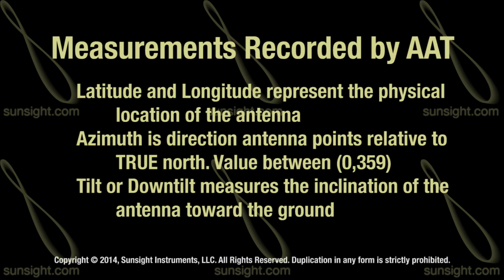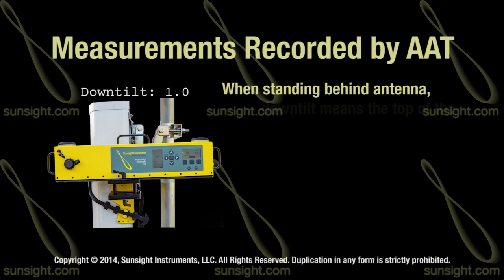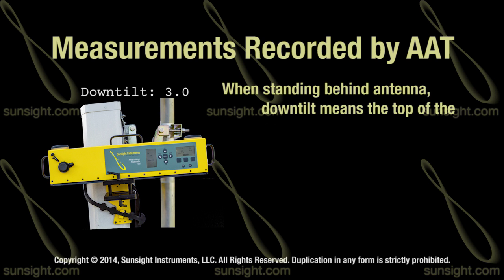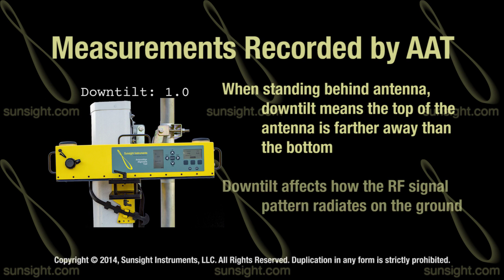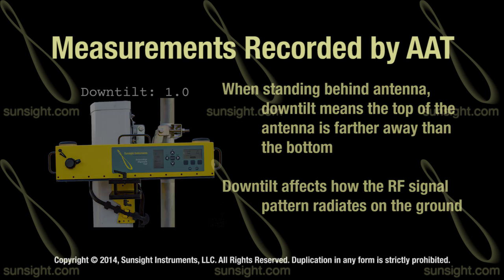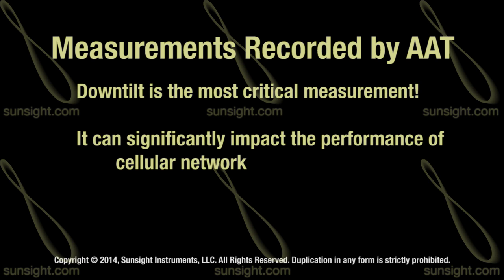Tilt, or more accurately down tilt, measures the inclination or slope of the antenna toward the earth. If you are standing behind the antenna, down tilt is when the top of the antenna is farther away from you than the bottom. This down tilt affects how the RF signal pattern radiates on the ground in a very important way, and is the most critical measurement in antenna alignment, significantly affecting cellular performance.